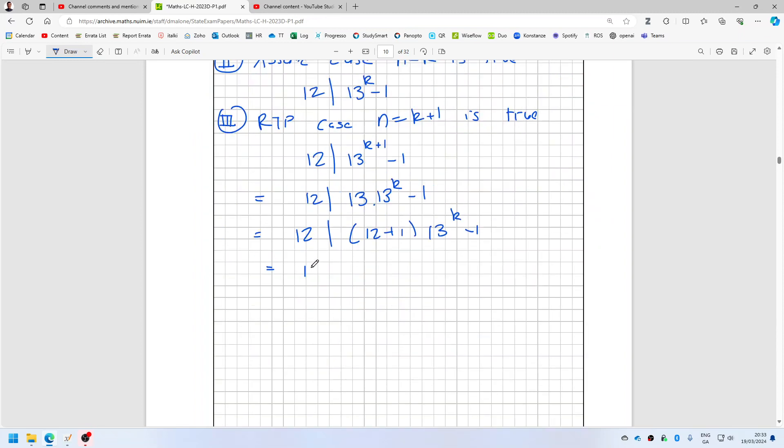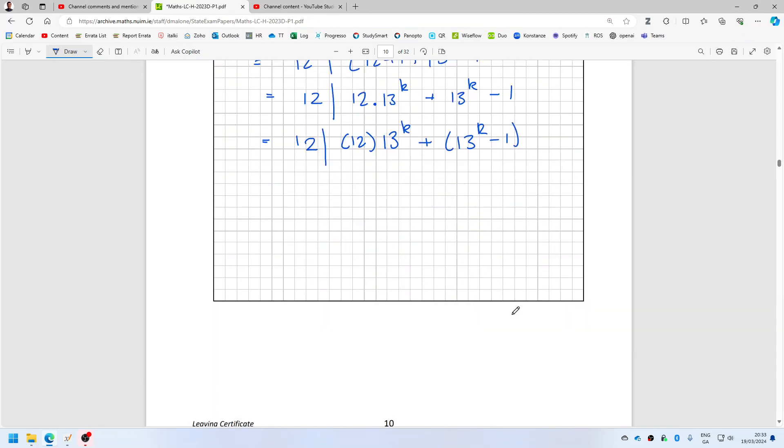And that can be expanded. So can 12 be divided into 12 times 13 power k plus 1 times 13 power k minus one? Or, I'll make it very explicit here: can 12 be divided into 12 times 13 power k plus 13 power k minus one? But this one here is clearly true.